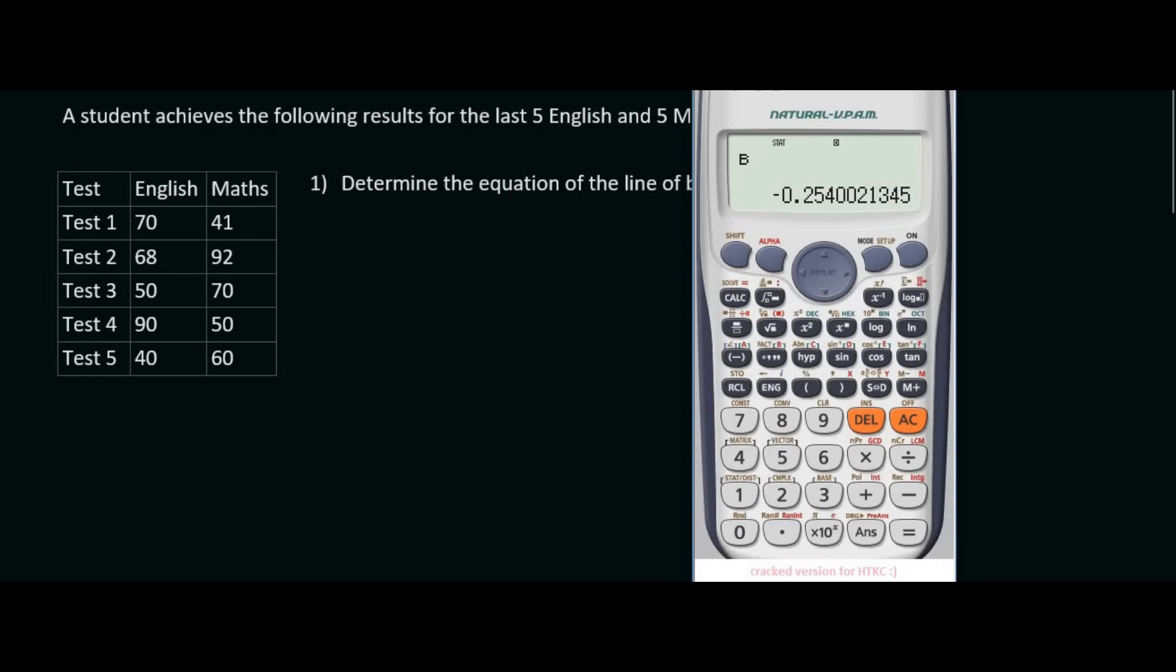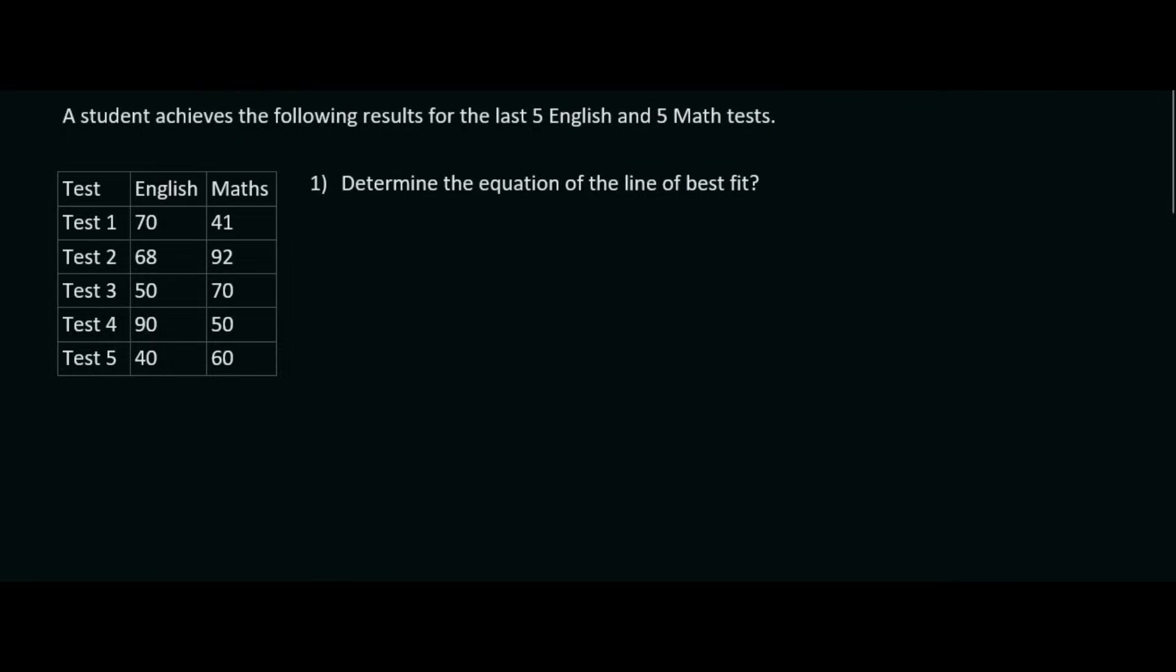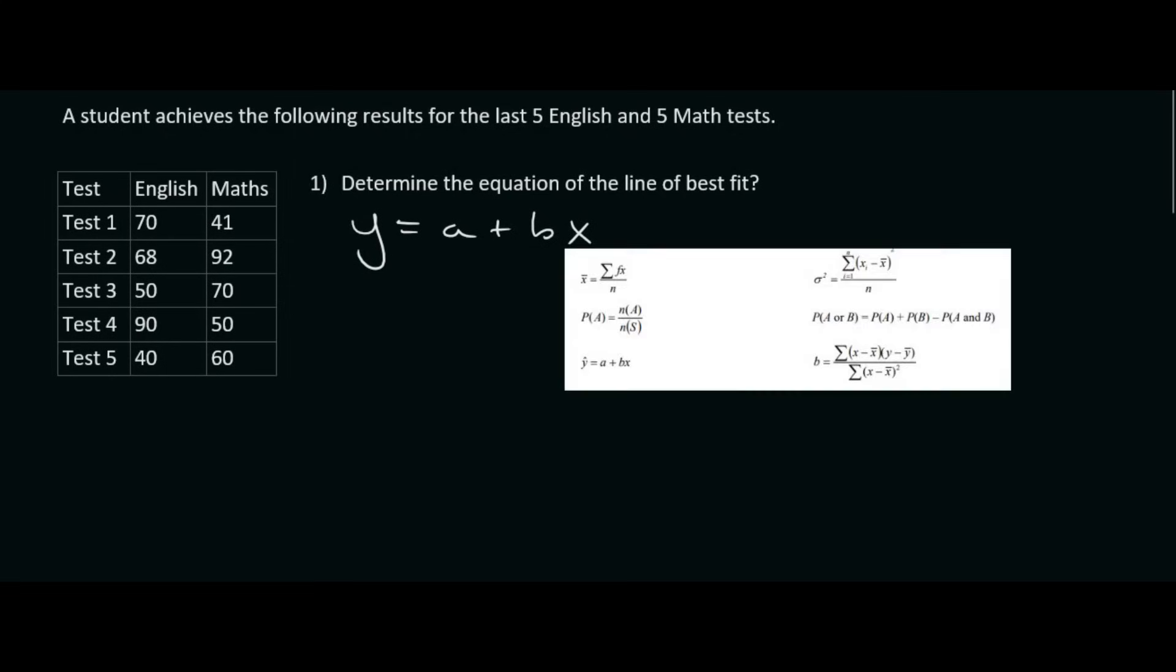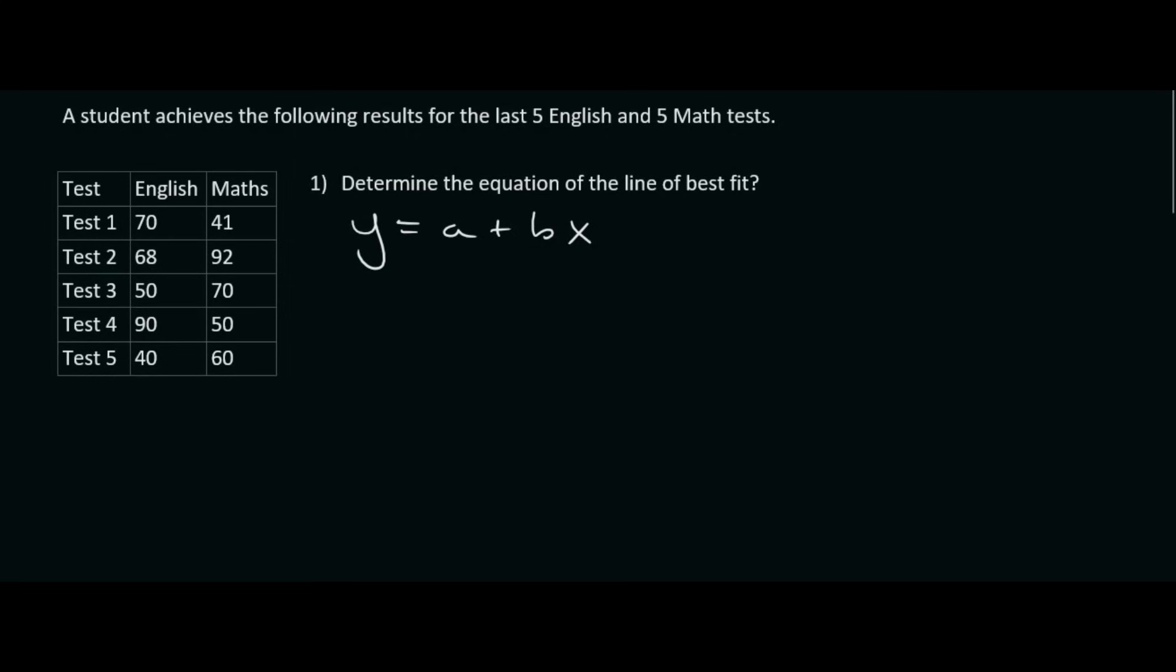So now we can fill in our equation because we know that the equation of a line in grade 12 statistics goes a plus bx. Remember it is on your formula sheet over here. And so we found that our a value was 78.75 and our b value was a negative. So that will be negative 0.25x. And there's the equation for the line of best fit.